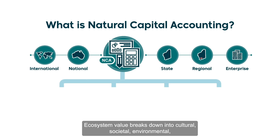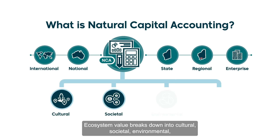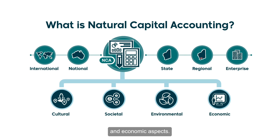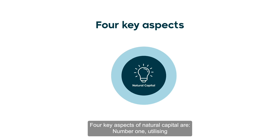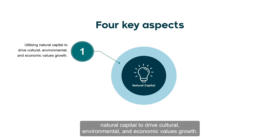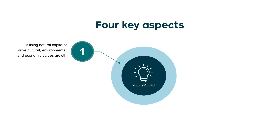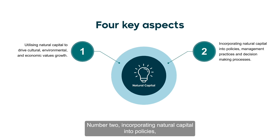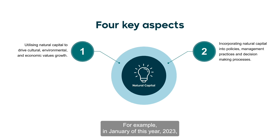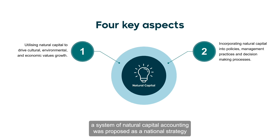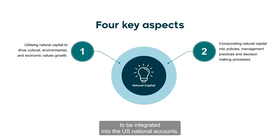Natural capital assets combine to provide value through ecosystem services. Ecosystem value breaks down into cultural, societal, environmental and economic aspects. Four key aspects of natural capital are: number one, utilising natural capital to drive cultural, environmental and economic values growth; number two, incorporating natural capital into policies, management practices and decision-making processes. For example, in January 2023, a system of natural capital accounting was proposed as a national strategy to be integrated into the US national accounts.